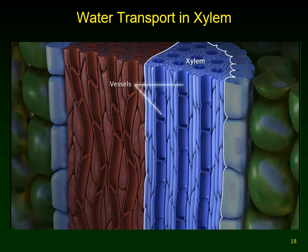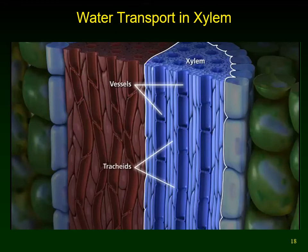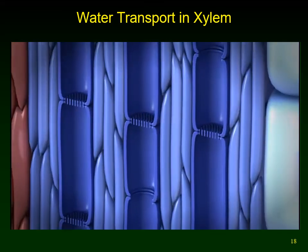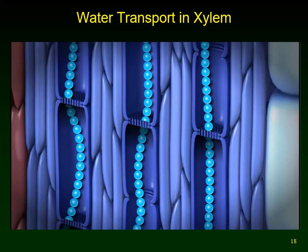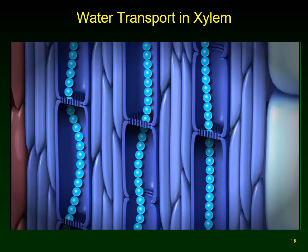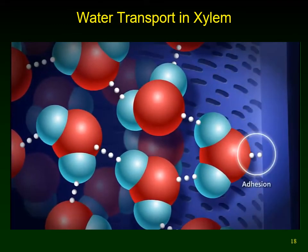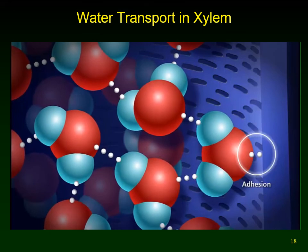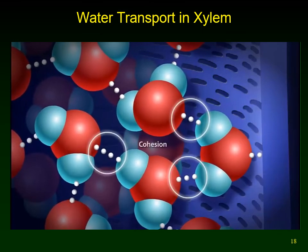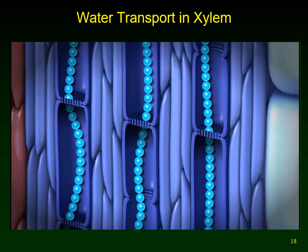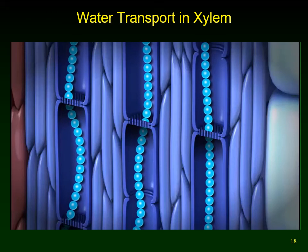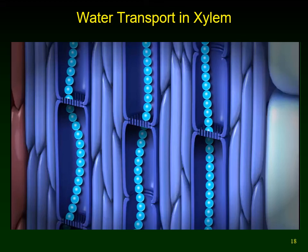Xylem is composed of vessels — continuous tubes formed from dead, hollow cylindrical cells arranged end to end — and tracheids, which are dead cells that taper as the ends overlap. This arrangement, and the polar nature of water molecules, allow water to pass in an unbroken stream through the xylem from the roots up through the shoot and into the leaves. Adhesion is the attraction of water molecules to a surface such as the xylem wall; cohesion is hydrogen bonding between water molecules. Together, adhesion and cohesion allow water to move through the xylem continuously from roots to stem, replacing water lost from leaves through stomata.